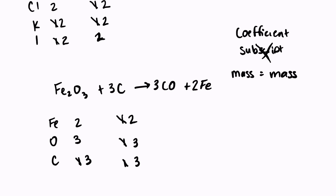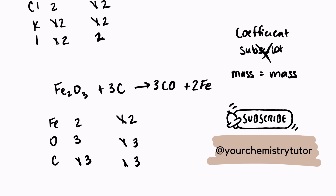Even during a chemical reaction, mass cannot be created, destroyed, or lost. So we do have to balance equations, and that will be the first important step in solving any stoichiometric problem. If you can't balance equations, you need to take time to practice, otherwise you will not be able to move on to stoichiometry. If there's anything else you'd like to know about balancing or if you have any questions, feel free to leave a comment. Don't forget to check out my other videos if you need help with any other areas of chemistry.